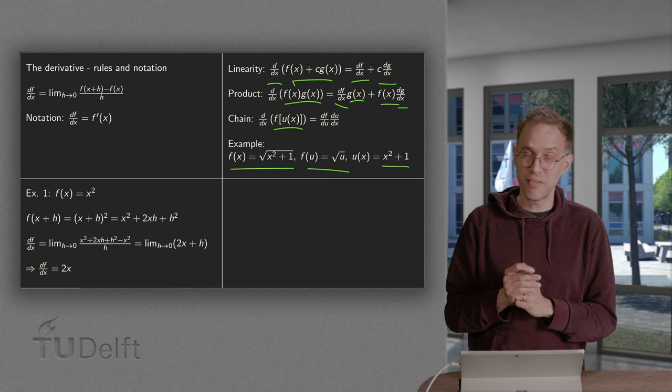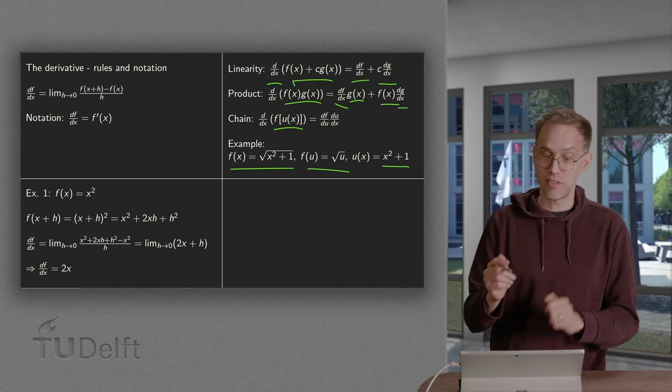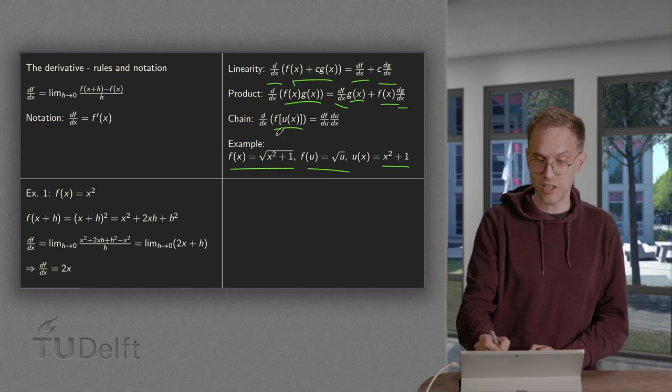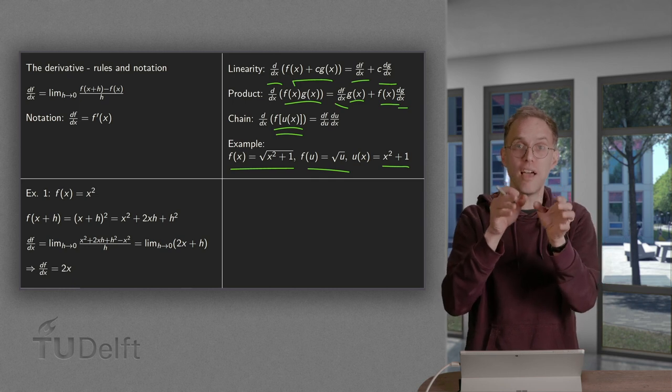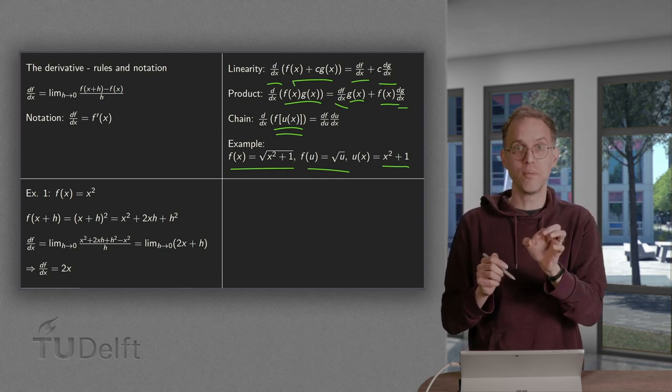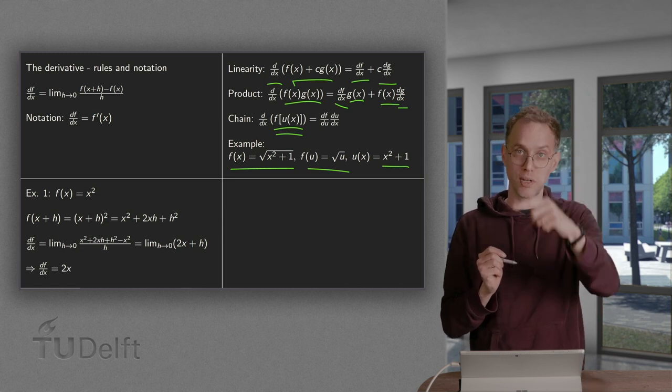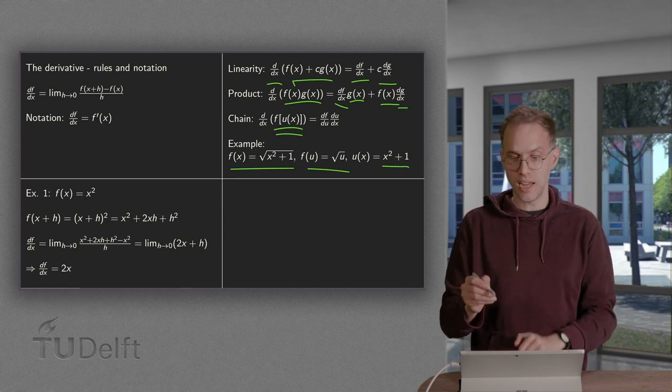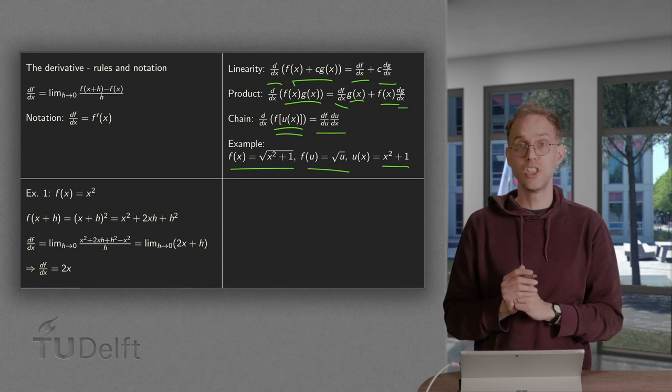So how can you compute the derivative of that? Fortunately for that we have the chain rule. So the d/dx of the composition f(u(x)), so f depends on u and u depends on x. What do you do? Differentiate f with respect to u times du/dx. And that gives you the chain rule.